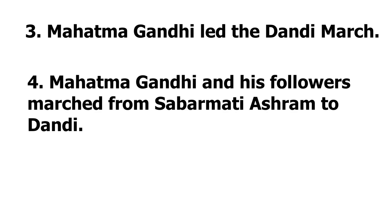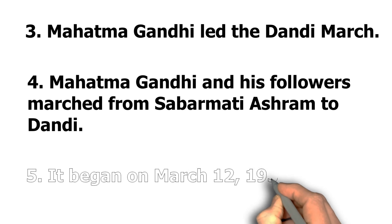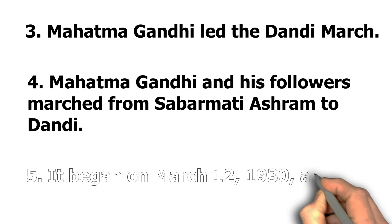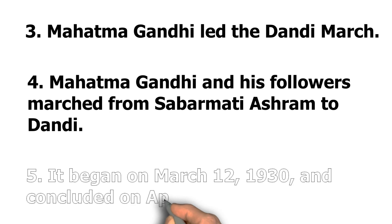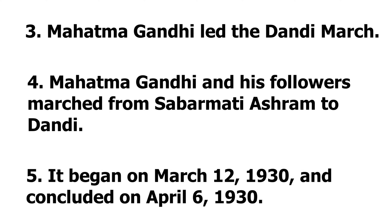Number 4, Mahatma Gandhi and his followers marched from Sabarmati Ashram to Dandi. Number 5, it began on 12 March 1930 and concluded on 6 April 1930.